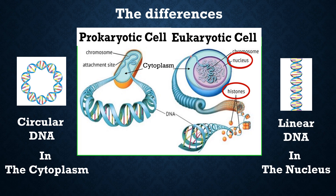The first difference is the DNA. In prokaryotic cells, we have circular DNA found in the cytoplasm. As you can see in this figure, the DNA is circular and exists in the cytoplasm. In eukaryotic cells, the DNA is linear and is found in the nucleus.